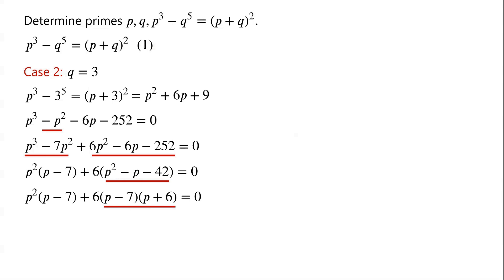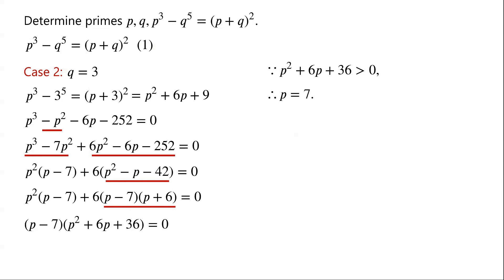So they can be factorized and written as p minus 7 times p squared plus 6p plus 36. Because p squared plus 6p plus 36 is always greater than 0, so p must equal 7. When p equals 7 and q equals 3, p cubed minus q to the power of 5 equals 7 cubed minus 3 to the power of 5, which equals 343 minus 243, which is 100. And p plus q all squared equals 7 plus 3 all squared, which is also 100. So (p, q) equals (7, 3) is a solution.